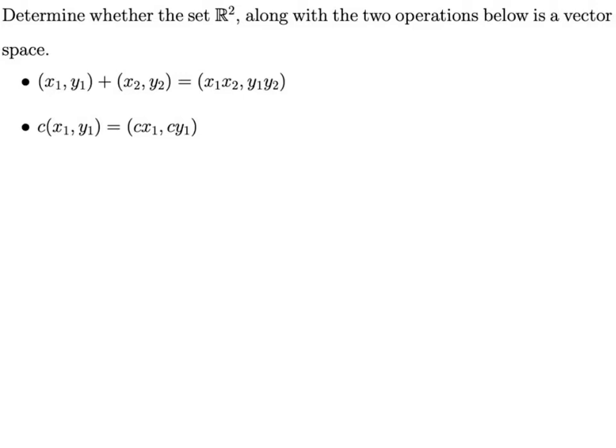So the set is just R², the set of ordered pairs of real numbers. Scalar multiplication is defined in the usual way that scalar multiplication of ordered pairs is defined. To multiply an ordered pair by a scalar, you just multiply each component by that scalar.